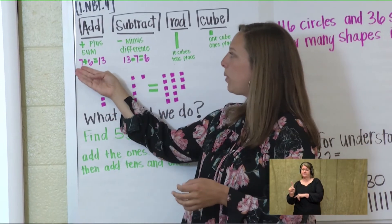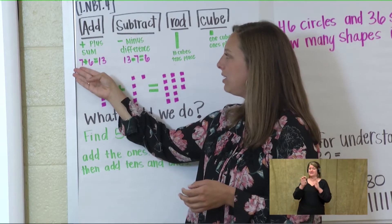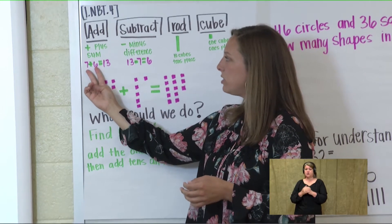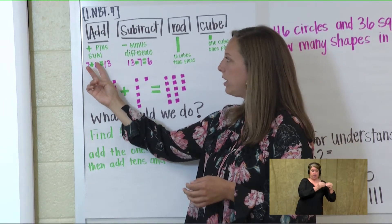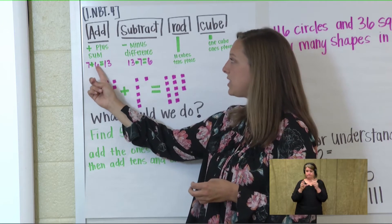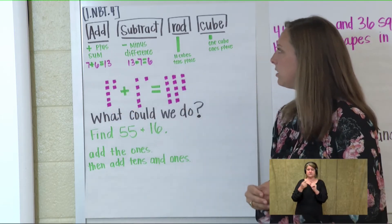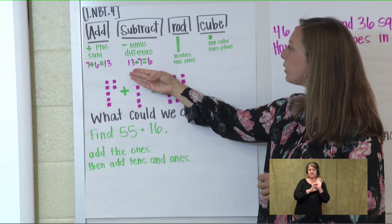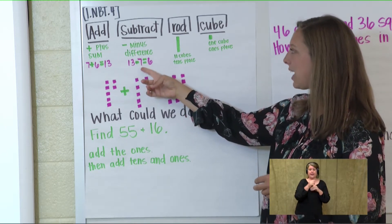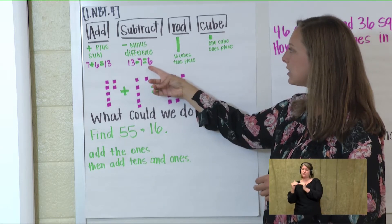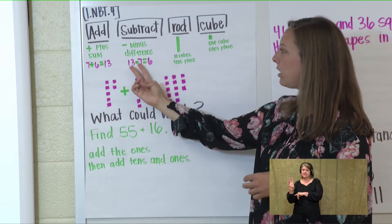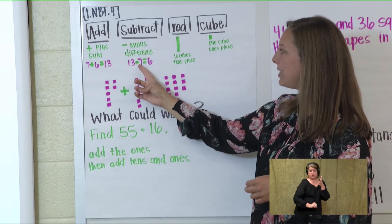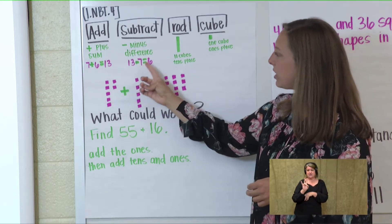Let's look at our example. We have 7 plus 6 equals 13. We had two numbers added with our symbol the plus sign to get the sum 13. Now let's look at our subtraction example: 13 minus 7 equals 6. We had our large number 13, we took away or subtracted 7 to give us the difference 6.